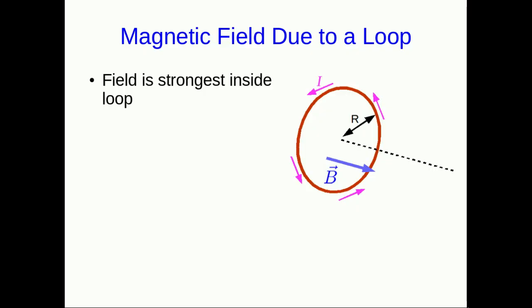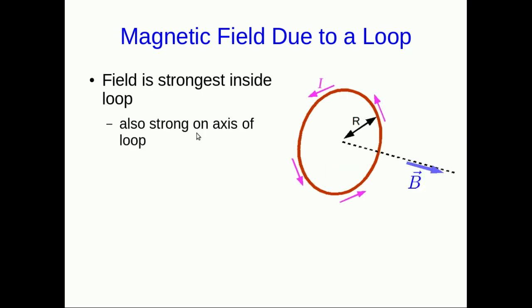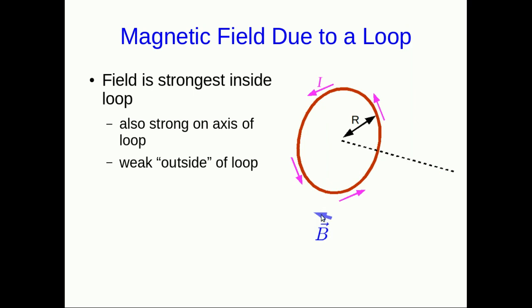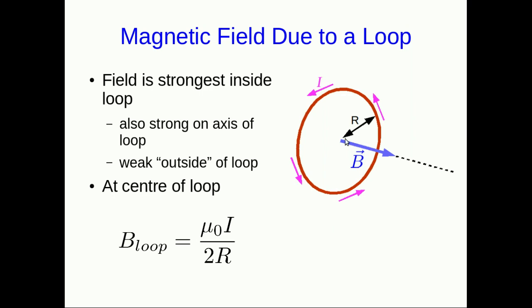In the vicinity of a loop, the field varies quite a bit from place to place. It's strongest inside the loop, in other words, in the plane and inside. It's also pretty strong out on the axis of the loop, if you don't go too far away. On the other hand, it's very weak outside the loop, as we already saw, and in the plane of the loop, outside the loop, it points the other way. Where it's strongest is at the very center of the loop, and there, the strength is given by this formula, where that capital R is the radius of the loop, and that's true really only at the very center, but as long as you're close to the center, this will be about right.